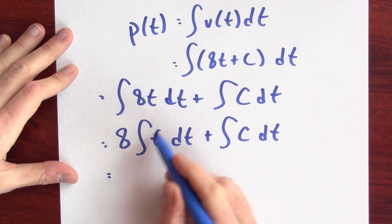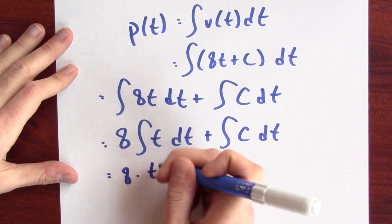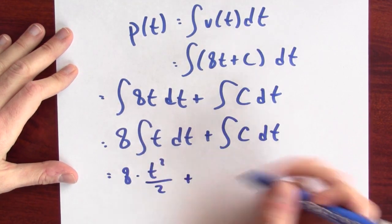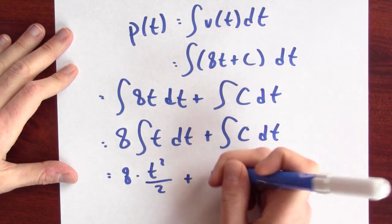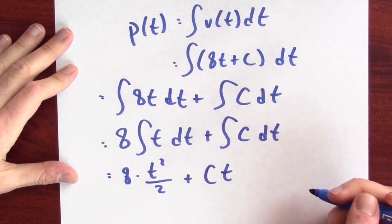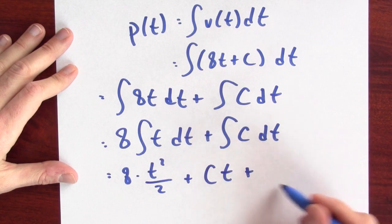Now, 8 times, what's an anti-derivative for t? Well, one of them is t squared over 2. And what's an anti-derivative for c? Well, c times t is an anti-derivative for c. And I should add some constant here.